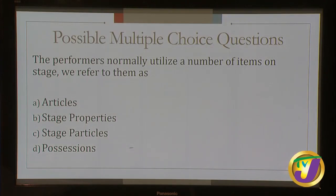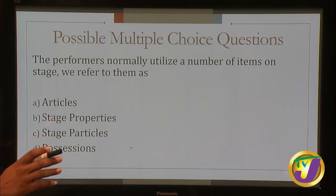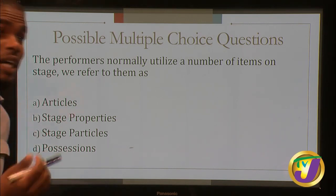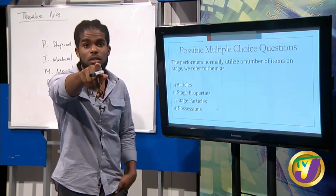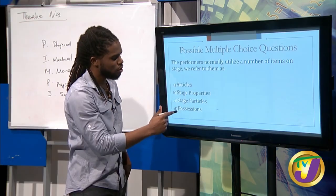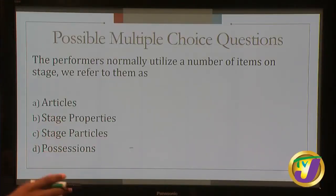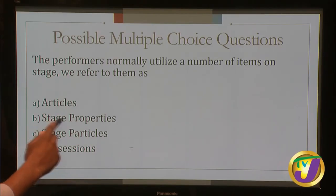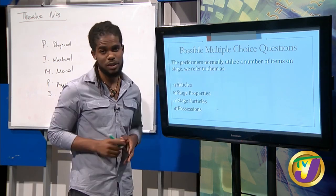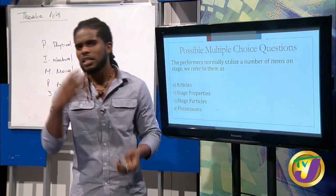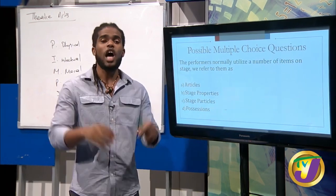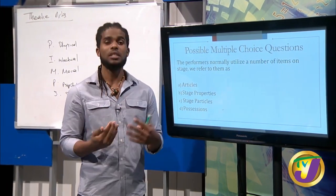Next question: performers normally utilize a number of items on stage — we refer to them as what? The answer is stage properties. Props is the short name for stage properties — these are items actors use: a marker, cell phone, knife, bag. Items fixed on the stage represent the set, while movable items used by actors are stage properties.